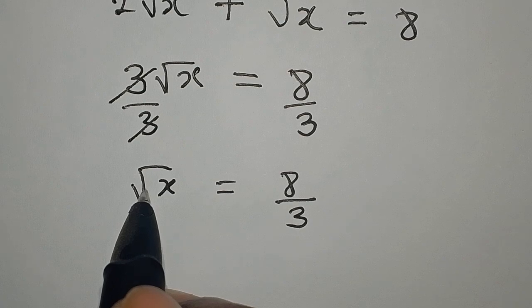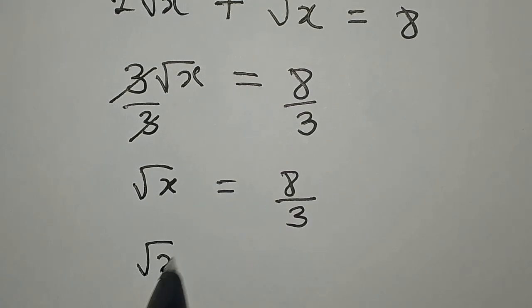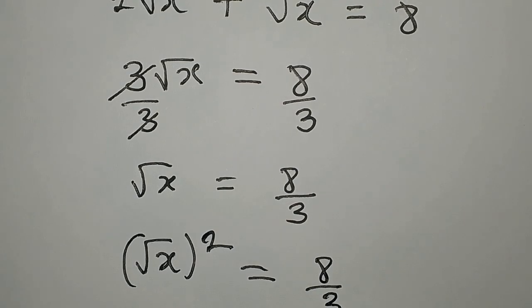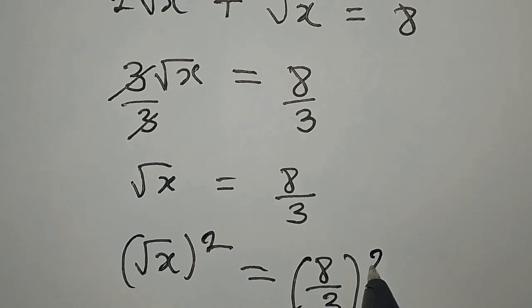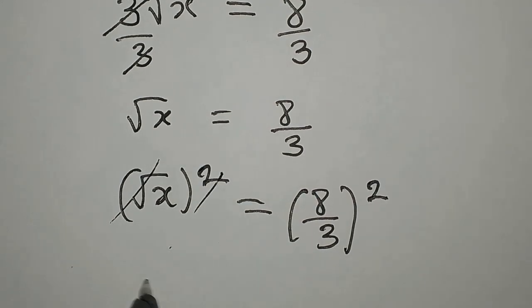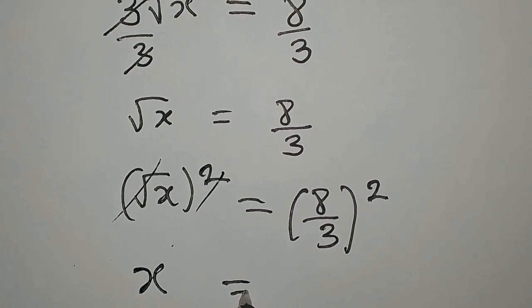But this is nowhere to stop because we need to remove this square root from here. So we have √x, we'll square this, then 8 over 3 together will be squared. This will go with this so that x will be alone.